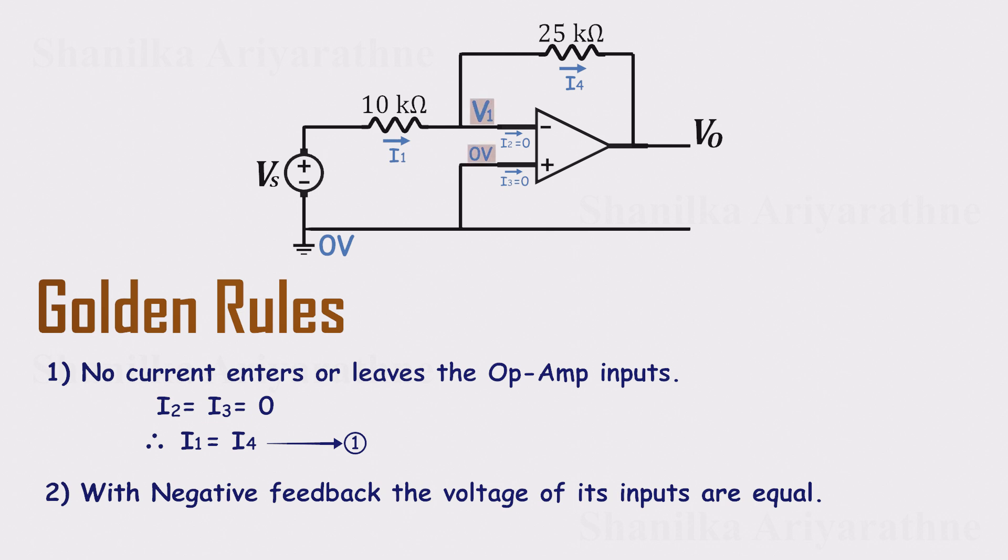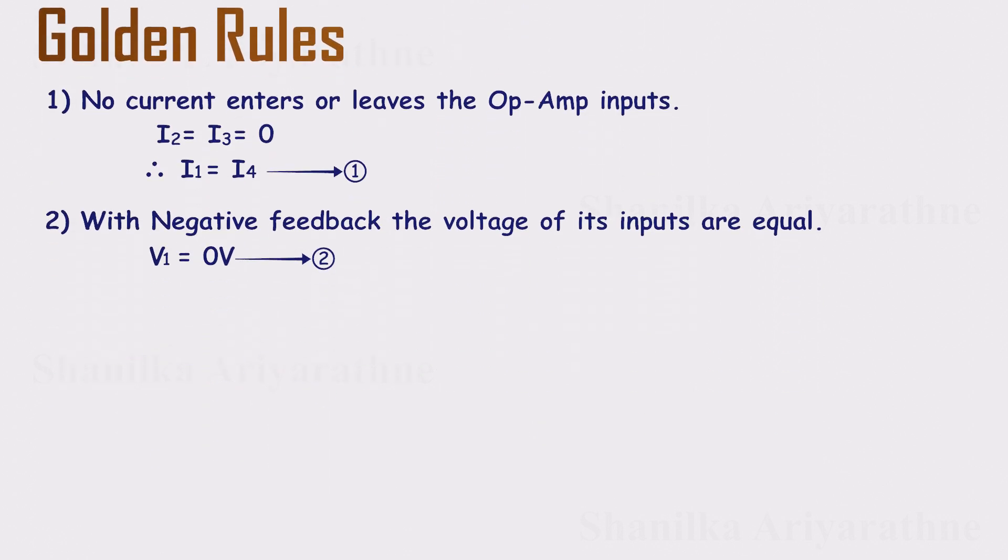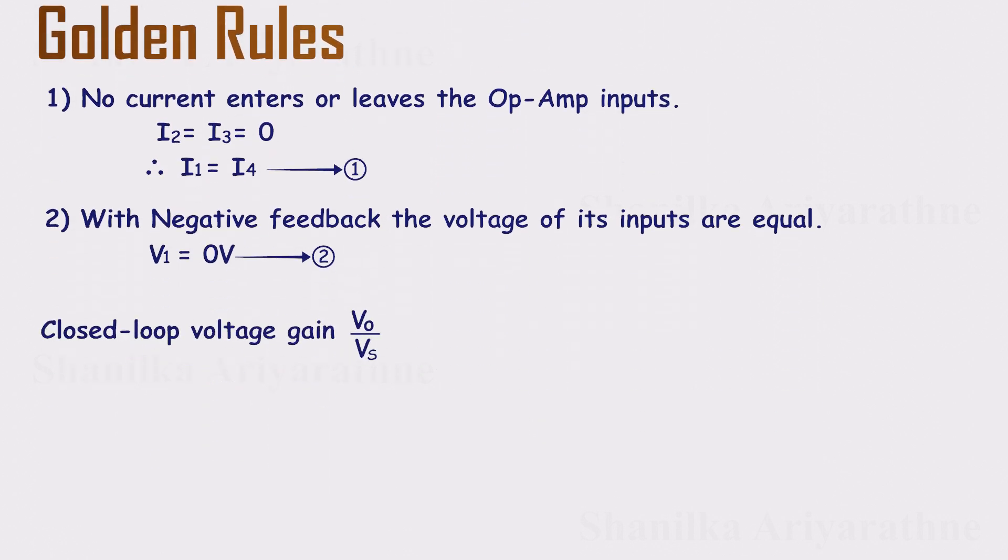So V1 equals 0. That's our second relationship. With those two rules in place, we can now calculate the gain. Remember, gain is just the ratio of output voltage to input voltage.